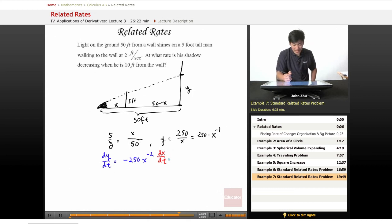Let's go ahead and plug in dx dt because we know that the man is walking to the wall at two feet per second. So x is changing at a rate of two feet per second, which is dx dt. So this expression becomes negative 250 times x to the negative 2 times 2, which equals negative 500 over x squared.